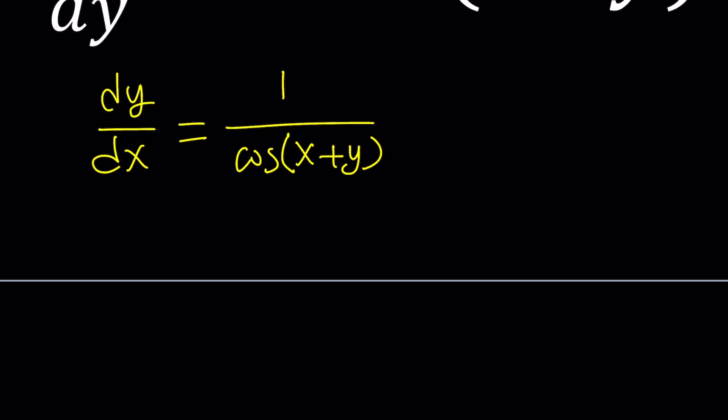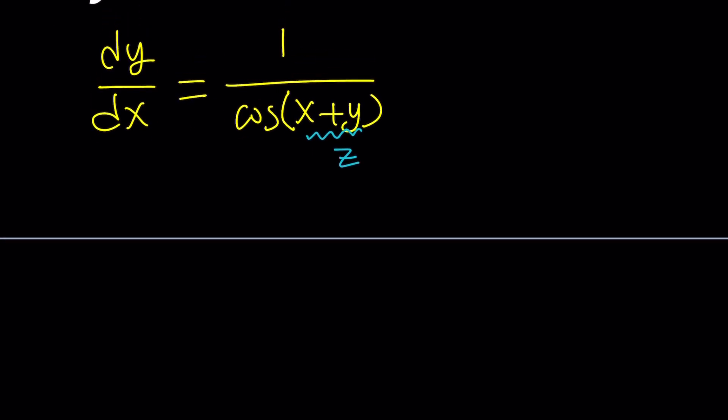Now we're going to use an awesome method — have you heard of it before? It's called substitution. We're going to call this something. How about z? You could also use u, t, whatever variable you like. By naming that z, we got the following equation: z equals x plus y.